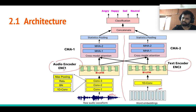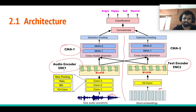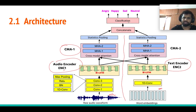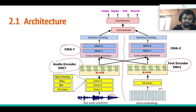Text data can be word embeddings or other embeddings like BERT embeddings; in this paper we use word embeddings, which are sequences of vectors for sequences of words. Each stream has a cross-modal attention block. Finally, we pool the sequence of features into a single utterance-level feature using statistic pooling, then concatenate the pooled feature vectors from both modalities to classify into one of four categories.